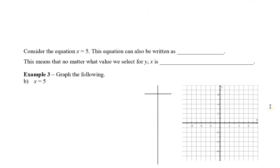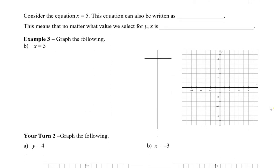Now, let's consider the equation x equals 5. So, this equation can also be rewritten as x plus 0 times y equals 5. So, this time, no matter what values we select for y, x is always going to equal 5.